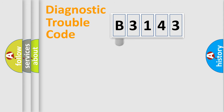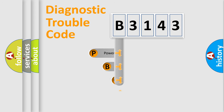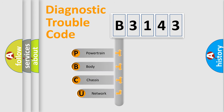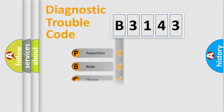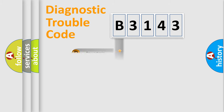Let's do this. First, let's look at the history of diagnostic fault code composition according to the OBD2 protocol, which is unified for all automakers since 2000. We divide the electrical system of the automobile into four basic units: Powertrain, Body, Chassis, and Network.